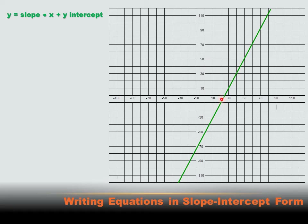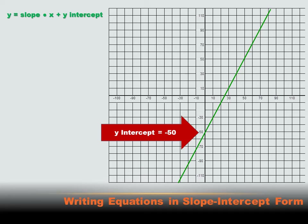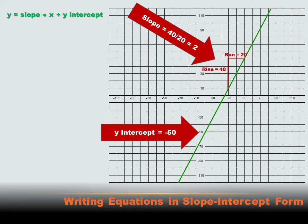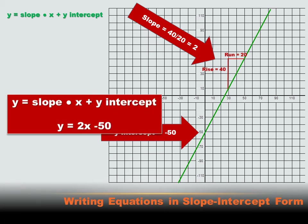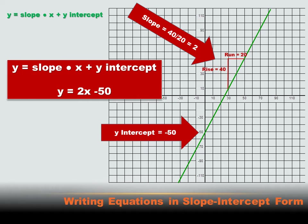The y-intercept is easy — it's where the line crosses the y-axis. In this case it crosses at minus 50, so our y-intercept is -50. Slope is rise over run: in this case it rises 40 and runs 20, so our slope is 40 over 20, which equals 2. We can now put that into the equation: y equals 2 times x plus the y-intercept, and since the y-intercept is negative, that's y equals 2x minus 50.